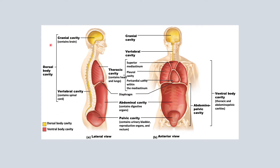Under the cranial cavity, we can see that it contains the brain, and when looking at the interior view, we can also see it there. In the lateral view, we're able to see the vertebral cavity a little bit more — this contains the spinal cord, not the vertebral column. Remember, it's just a space and it contains the spinal cord.